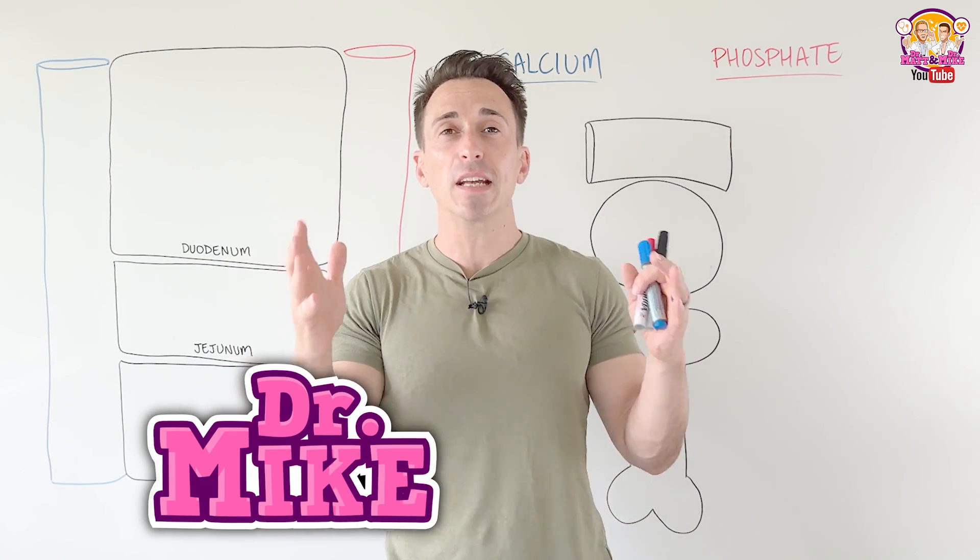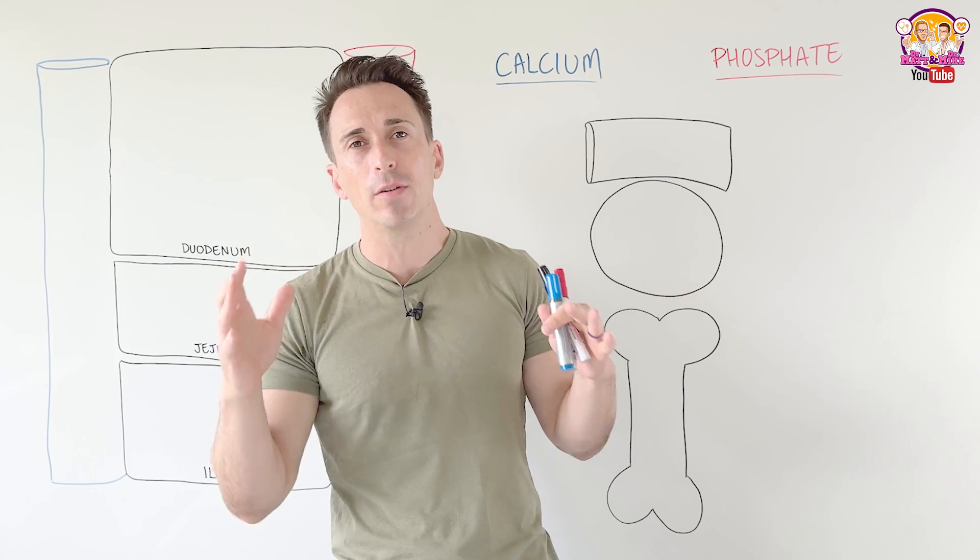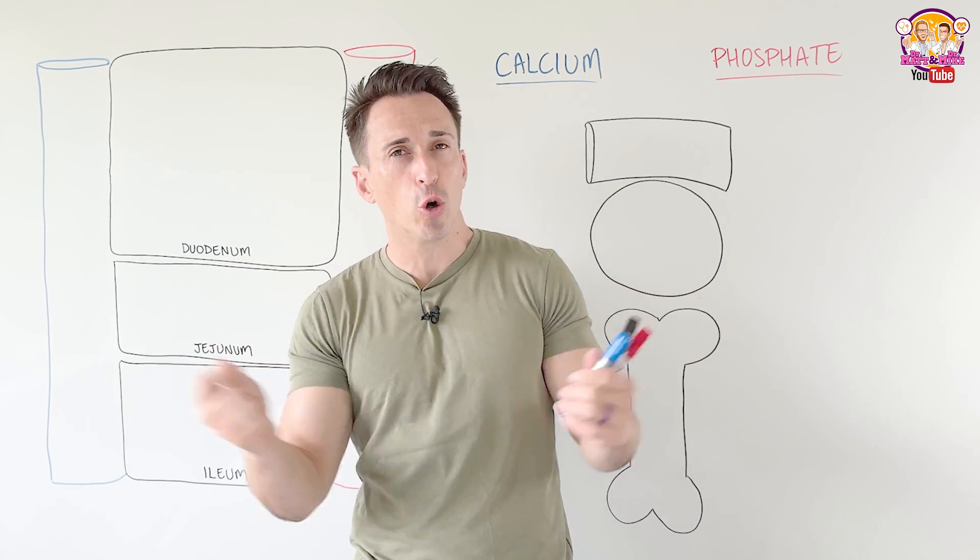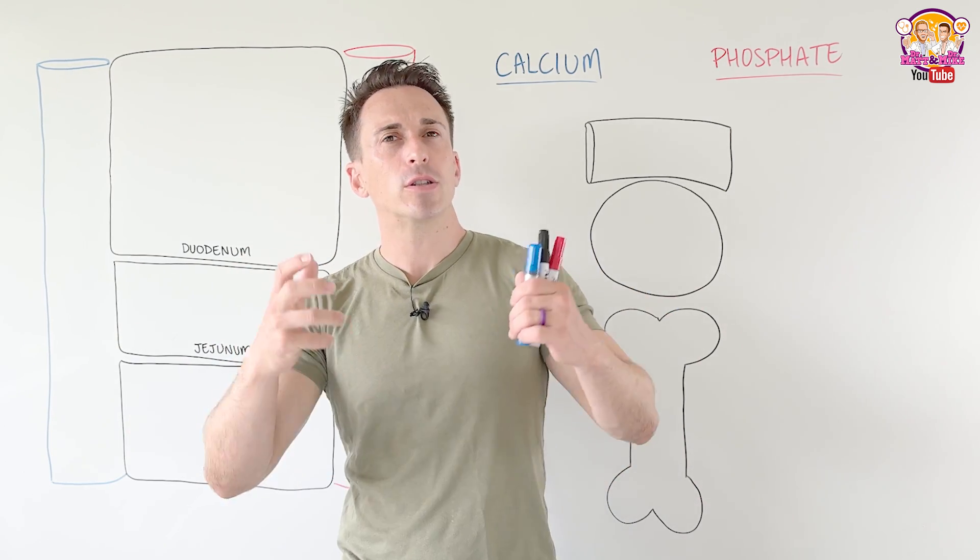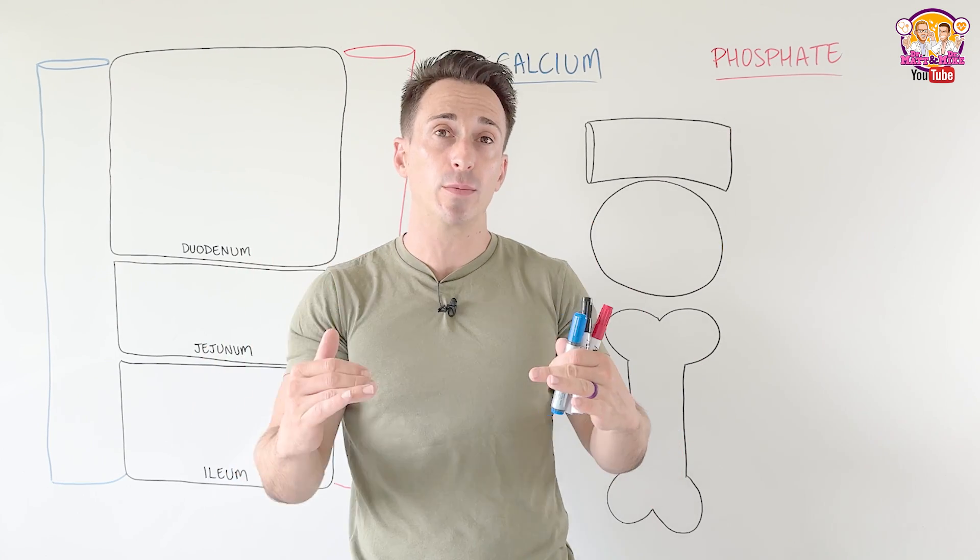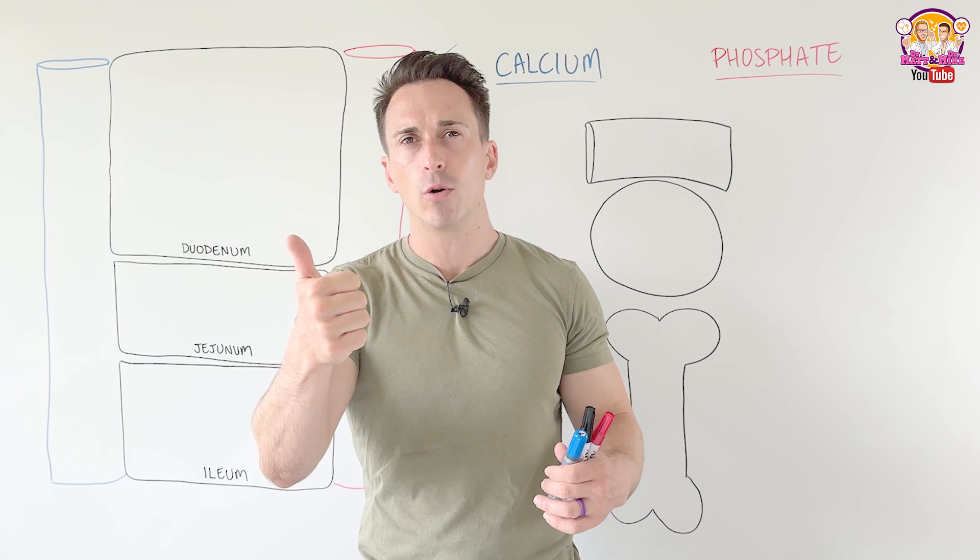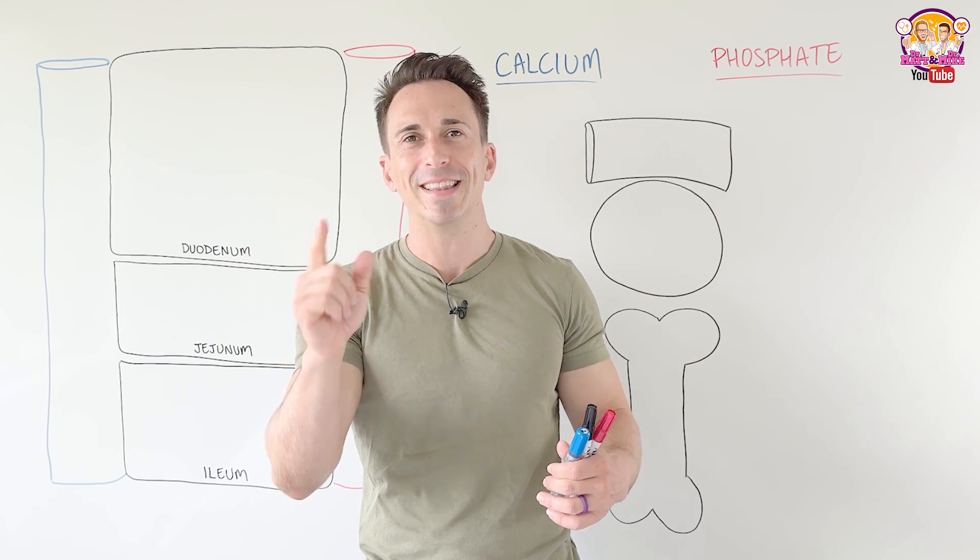Hi everyone, Dr. Mike here. In this video we're taking a look at calcium and phosphate homeostasis. We're going to have a look at how calcium is absorbed in the body, where it's stored along with phosphate, and also how we maintain levels of calcium and phosphate using two very important hormones: parathyroid hormone and vitamin D. Let's take a look.